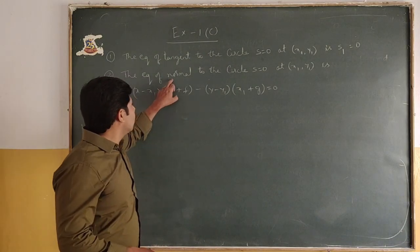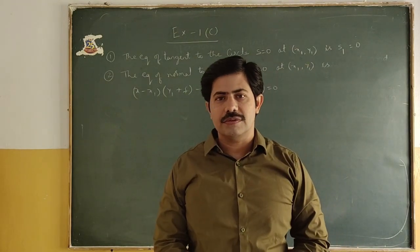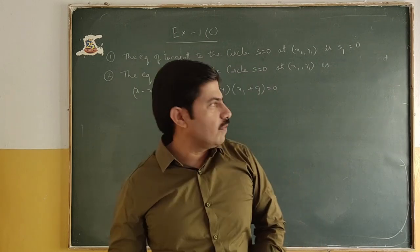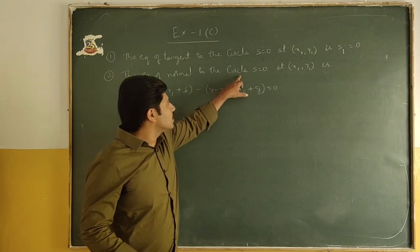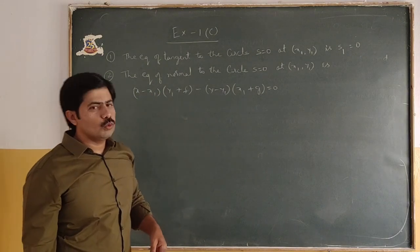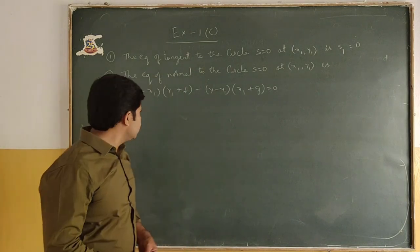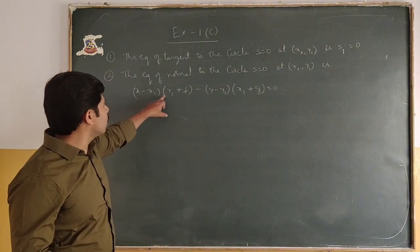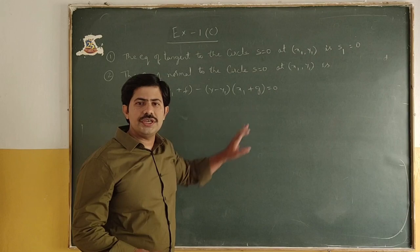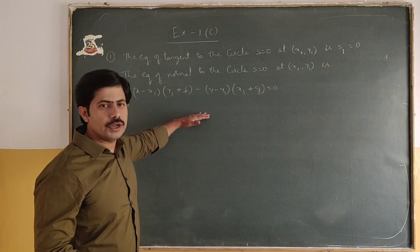Next is the normal. What is a normal? Normal is a line which is perpendicular to the tangent. Here we have to find the equation of normal where a circle equation is given and a point (x1, y1) is given. The equation of normal to the circle S=0 at (x1, y1) is: (x - x1)(y1 + f) - (y - y1)(x1 + g) = 0. These formulas are very important — write them down.